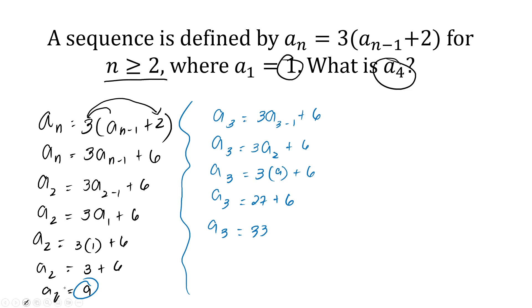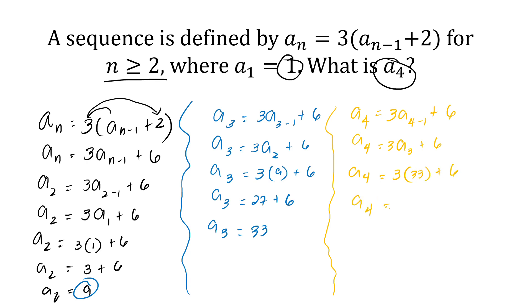We can now compute a sub 4 since we already have the value of a sub 3. So a sub 4 is equal to 3 times a sub 4 minus 1 plus 6, where a sub 4 minus 1 is a sub 3. The value of a sub 3 is 33. So a sub 4 is equal to 3 times 33, which is 99, plus 6. A sub 4 is equal to 105. So the value of a sub 4 is 105.